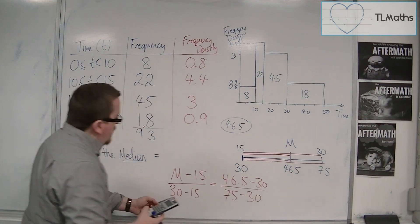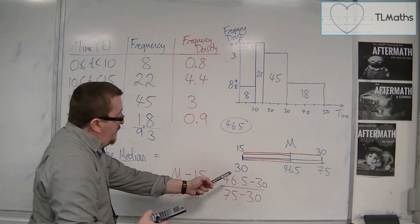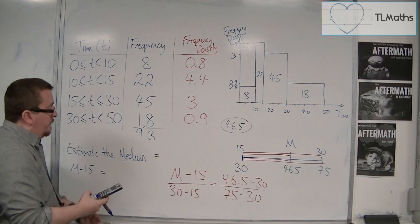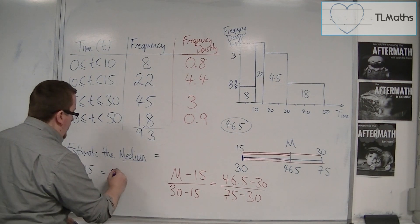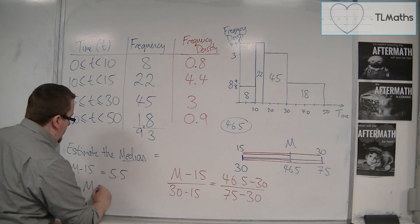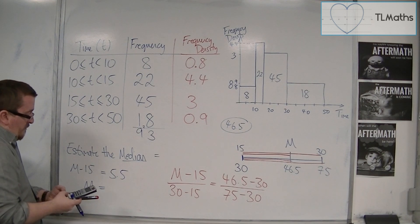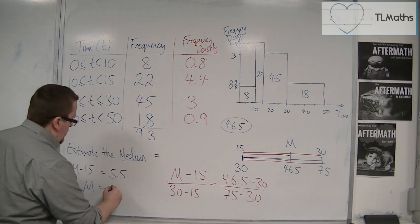And then we're going to multiply both sides by the 15. And then, well that is 5.5. And so M, the median, is 5.5 plus 15. So 20.5.